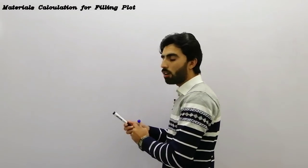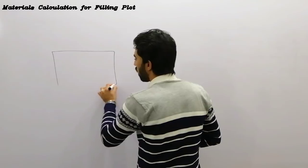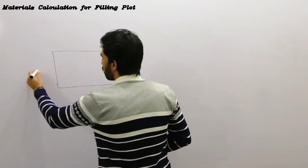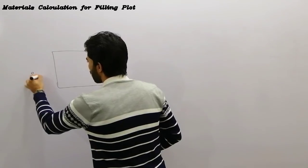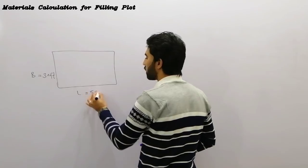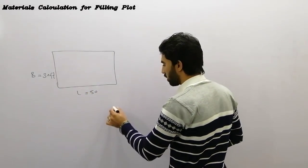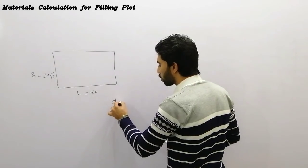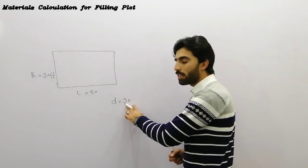First of all, we will find the area of the plot. Suppose this is the plot with width here. For example, if the breadth is here 30 feet and the length of the plot is 50 feet. So first of all we will find the area and filling depth. Filling depth means what should be the depth - for example we required a filling depth here that is 3 feet.